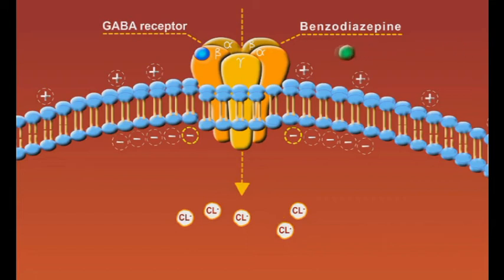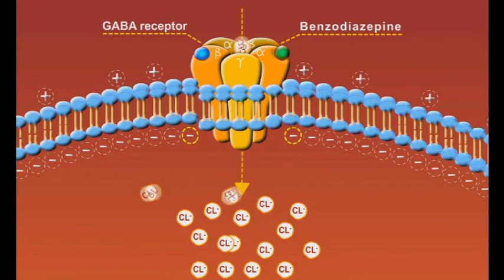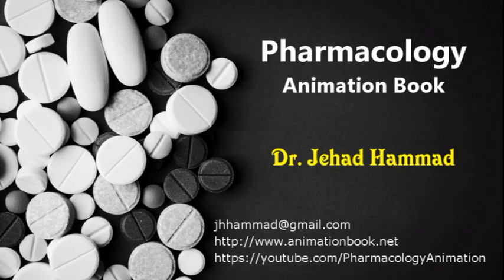When benzodiazepines attach to the receptor, they increase the affinity and therefore the binding of GABA. This increases chloride channel opening frequency and results in the entrance of greater amounts of chloride ions, eventually leading to greater neuronal inhibition.